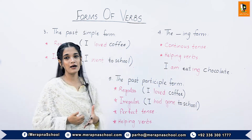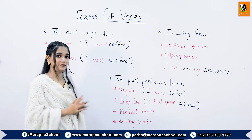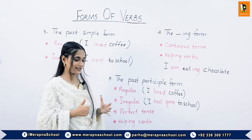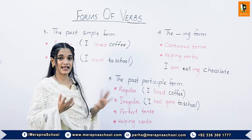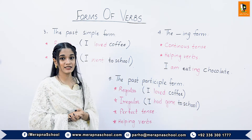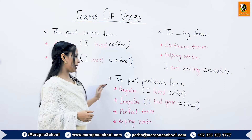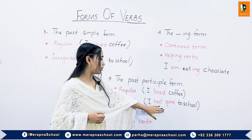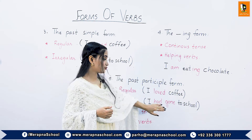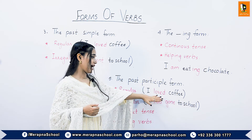Moving on to the past participle form — it is used in the perfect tenses, and helping words are used before them. The helping words can be have, had, or has. They can also be regular and irregular. The irregular form is totally different from the base form and the past simple form. For example, 'I had gone to school' — 'gone' is the past participle form of 'go.' For the regular form, 'I loved coffee' — 'ed' is added, which is the same as the past simple form.